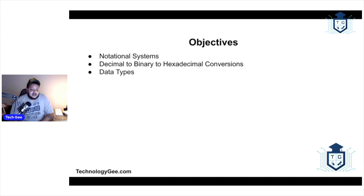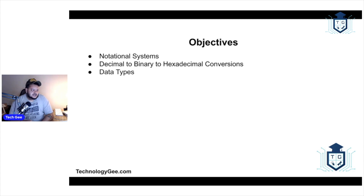Hopefully those of you who participated did well. The class average for everybody who took this test came out to be 61. You need at least a 72 to pass the quiz I set up. The topics you were supposed to study were notational systems, decimal to binary to hexadecimal conversions, and data types.